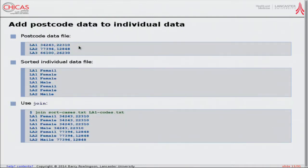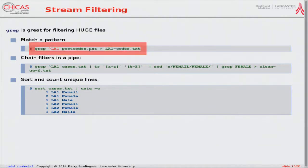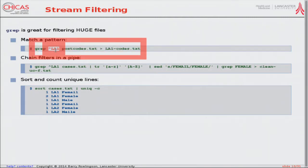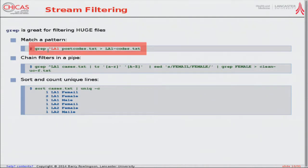I often use grep for filtering really huge files. I've got a text file of all UK postcodes — several hundred thousand — but I only care about the LA1 region. So I can search for all postcodes starting with LA1 and redirect the output using `>` into a file called LA1codes.txt. The `^` hat character marks the start of a line, so any lines starting with LA1 end up in my subset file.